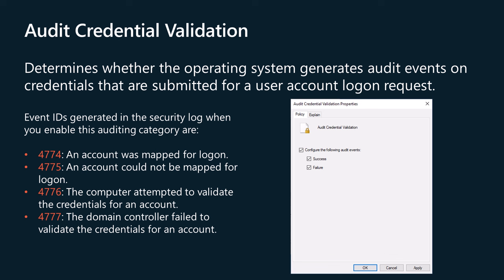The Audit Credential Validation policy determines whether the operating system generates audit events on credentials that are submitted for a user account logon request. These events occur on the computer that is authoritative for the credentials. For domain accounts, the domain controller is authoritative. For local accounts, the local computer is authoritative. The event volume is high on domain controllers and low on member servers and workstations. Because domain accounts are used much more frequently than local accounts in enterprise environments, most account logon events occur on the domain controllers that are authoritative for the domain accounts. However, these events can occur on any computer and may occur in conjunction with or on separate computers from logon and log off events.